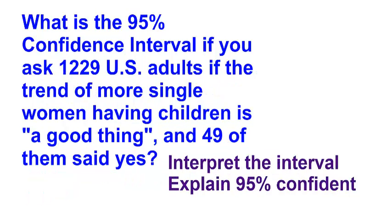Now you try this one on your own, and when you're ready to check your answer, restart the video and we'll go over this problem. What is the 95% confidence interval if you ask 1,229 U.S. adults if the trend of more single women having children is a good thing, and 49 of them said yes? Find the 95% confidence interval, then interpret the interval, and then explain the 95% confidence.